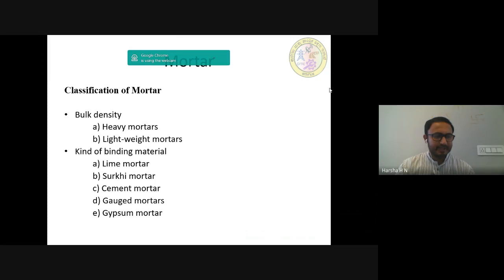Next type is gauged mortars. To improve the quality of lime mortar and to achieve early strength, the cement is sometimes added to it. This process is known as gauging. It makes the lime mortar economical, strong and dense. The usual proportion of cement to lime by volume is about 1 is to 6 to 1 is to 8. It is also known as the composite mortar or lime cement mortar and it can also be formed by the combination of clay. This mortar may be used for bedding and for thick brick walls. Next type is gypsum mortar. These mortars are prepared from gypsum binding materials such as building gypsum and hanidrate binding materials.